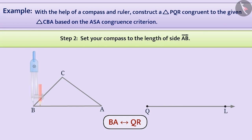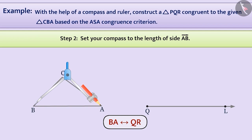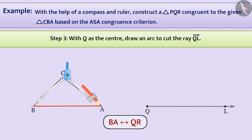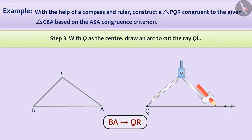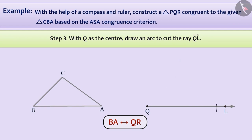Step 2: Place the pointed tip of the compass at the vertex B of triangle CBA and adjust the opening so that the tip of the pencil is at vertex A. Set your compass to the length of side AB. Step 3: With the same opening as in step 2 and with Q as the centre, draw an arc to cut the ray QL at a point. This point of intersection is the vertex R of triangle PQR.